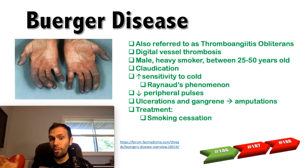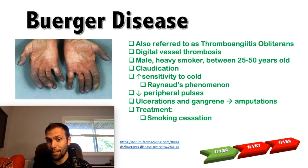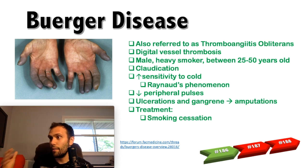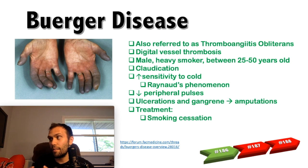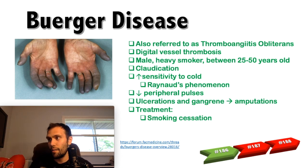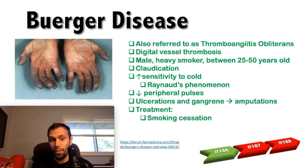They might have color changes in the extremity — reddish to blue all the way to gangrenous — depending on the level of occlusion. As arterial blood flow diminishes, the skin becomes very thin and shiny, eventually leading to ulcers, gangrene, and possibly amputation. Quitting smoking can slow disease progression, but once started, smoking cessation does not halt the disease process. Vasodilators can help reduce pain but do not change the course of disease.